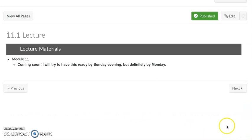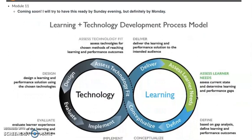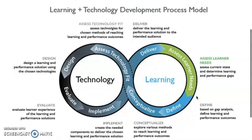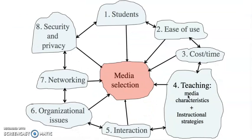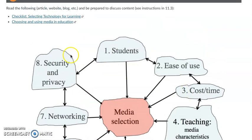I wanted to point out this visual — you will see it in the readings, probably in better quality. I tried to resize it a couple of times, but I thought it was a really good model, and you guys have expressed you've liked some of these models as we consider technology and learning. The readings this week should get you started thinking about these things. I like this model as well — it looks really good for thinking through media selection, with student need first, then working through the other areas. Really good content that'll hopefully get you thinking.